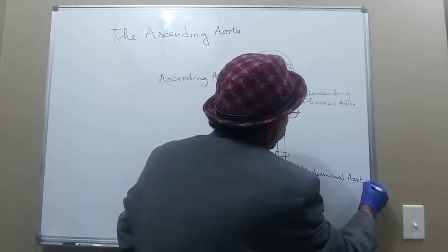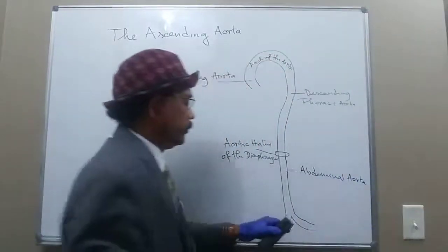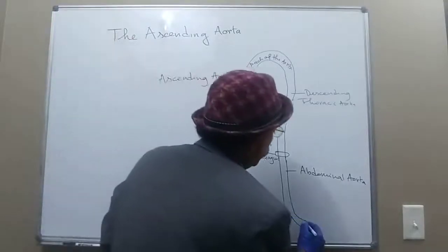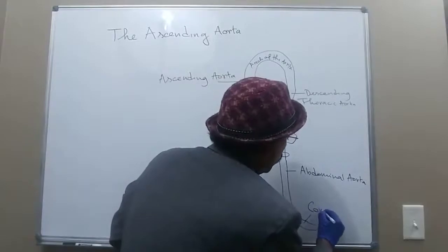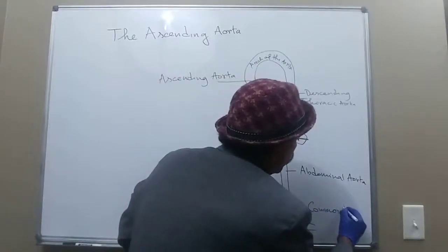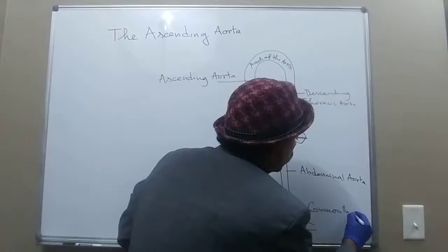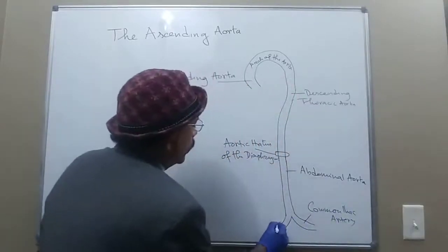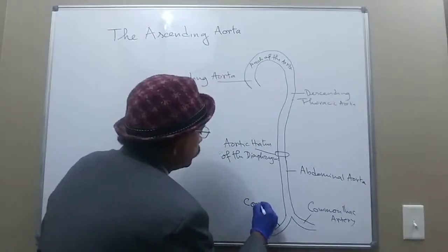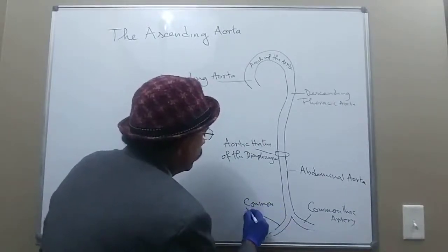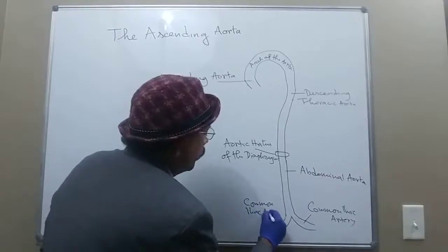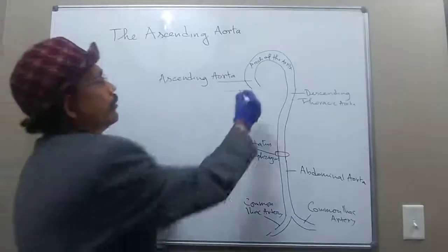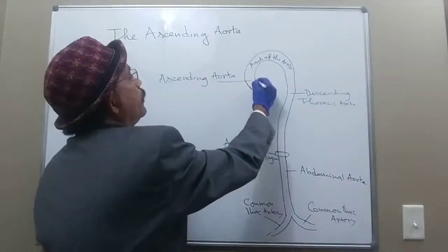The abdominal aorta bifurcates into the left and right common iliac arteries. Today I will emphasize on the ascending aorta.